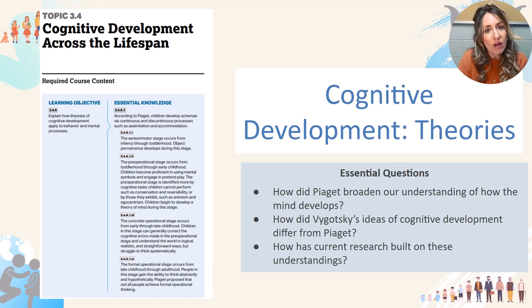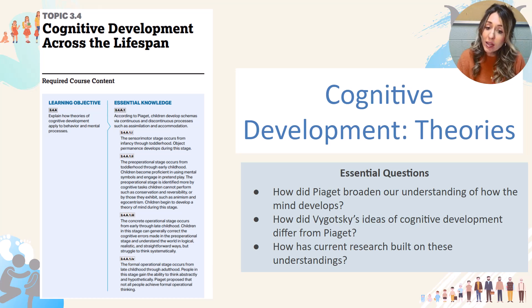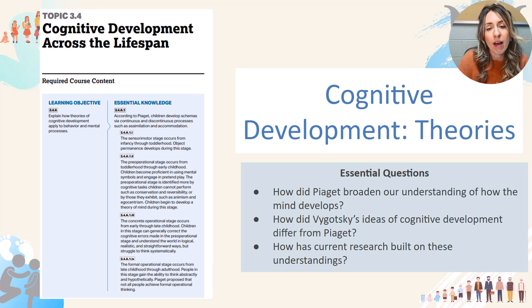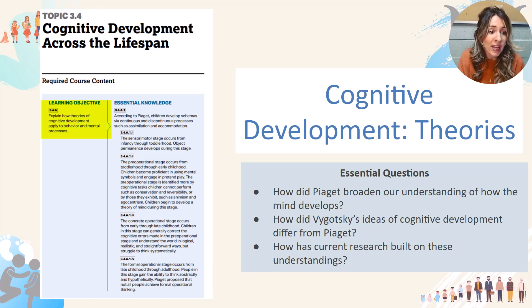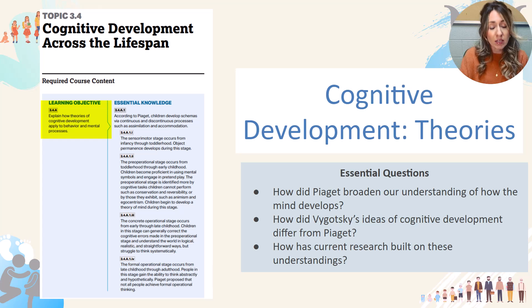Hi AFP Psychology students and welcome back. Today we are moving away from physical development into our topic of cognitive development, and we're going to be focusing on some specific theories that have been created to explain how our ability to reason and process and think changes over time. This aligns with College Board topic 3.4, cognitive development across the lifespan, and goes with the learning objective: explain how theories of cognitive development apply to behavior and mental processes.